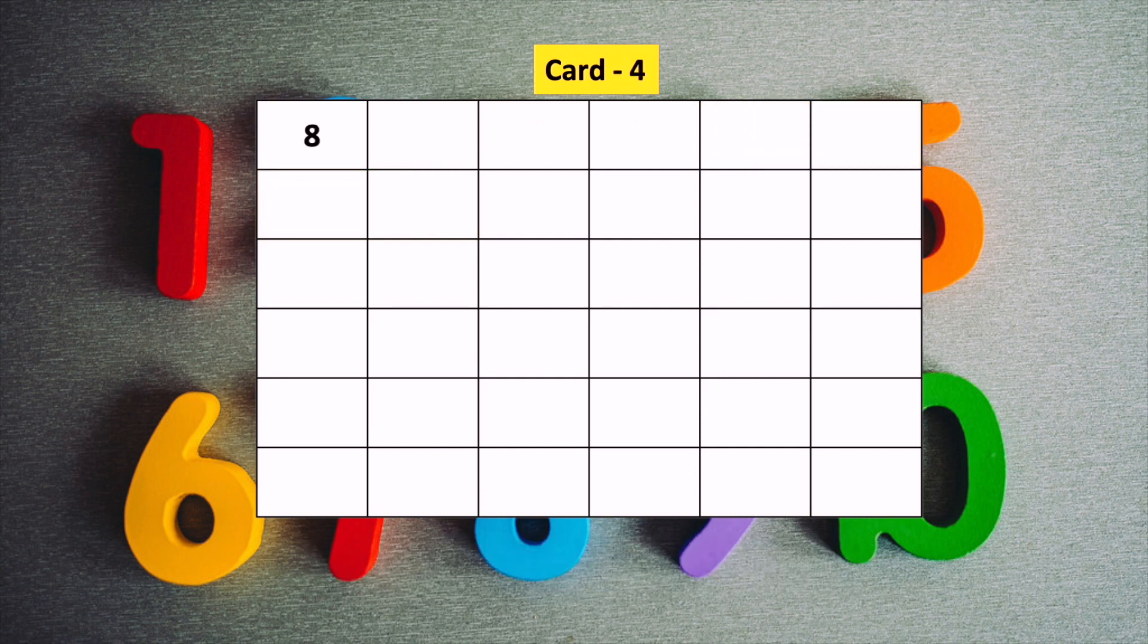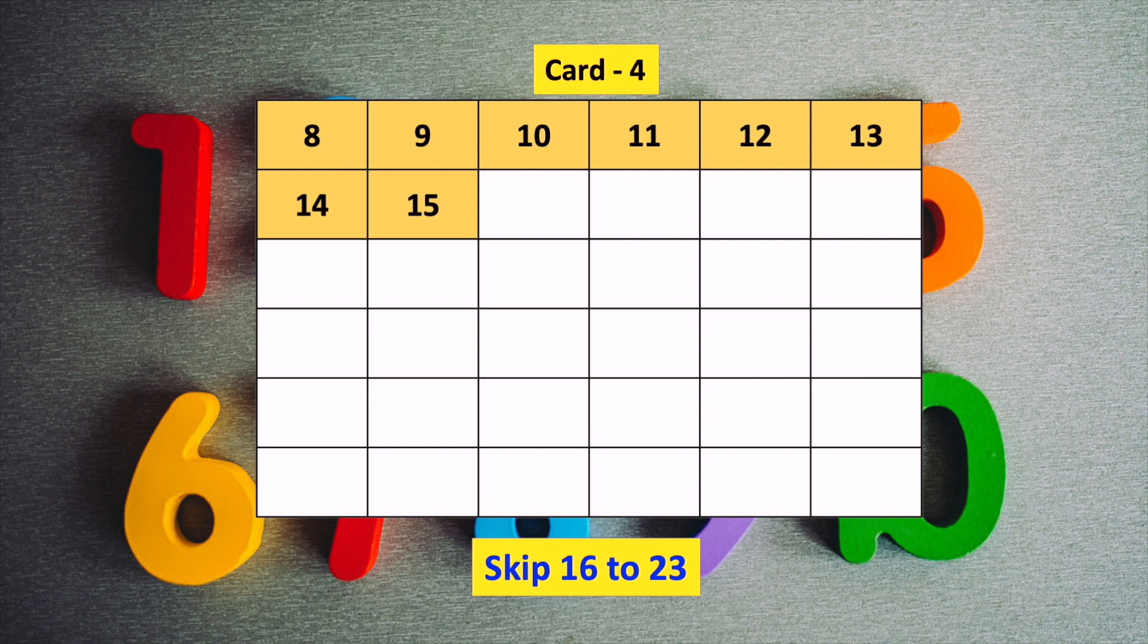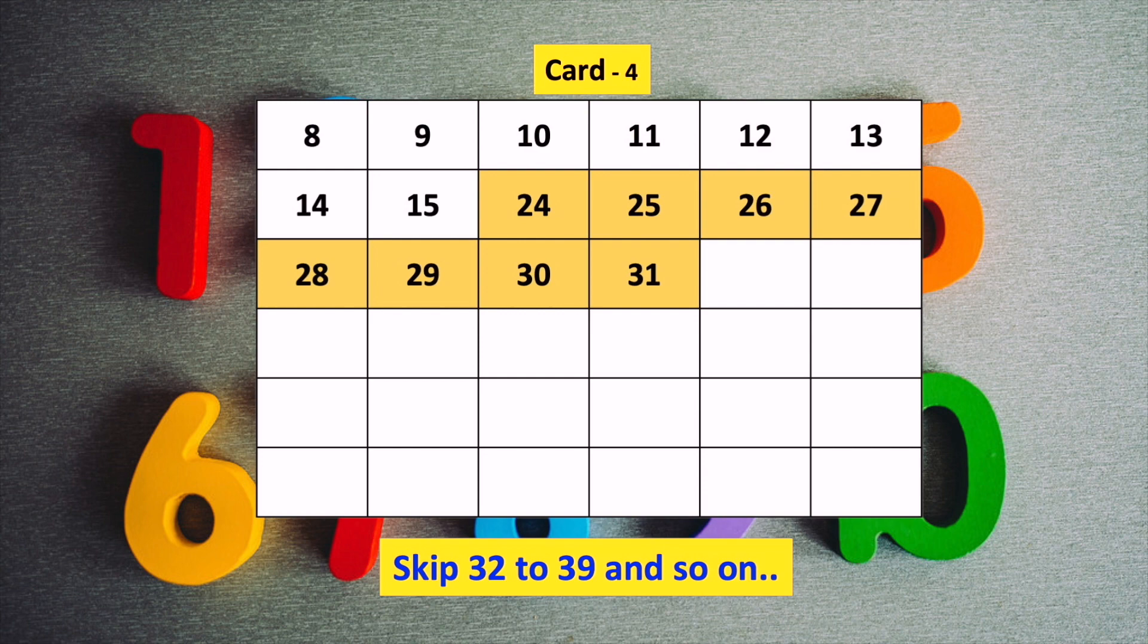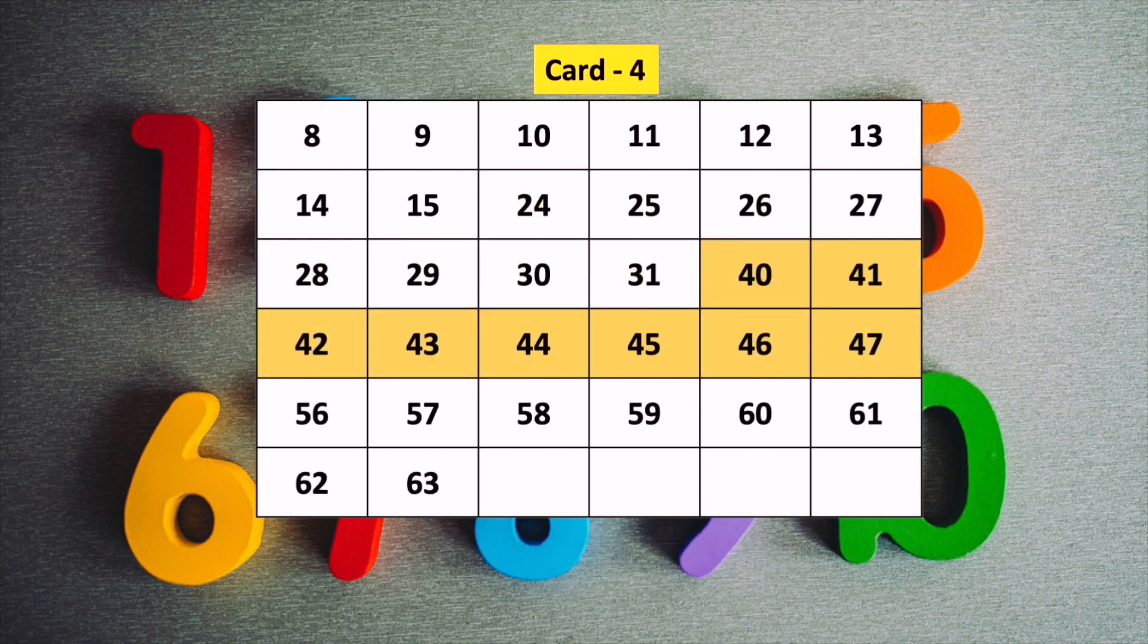For the fourth card, we start from number 8. In this card, we write 8 numbers, then skip 8 numbers. So we write 8 to 15, then skip 16 to 23. We continue like this till number 63.